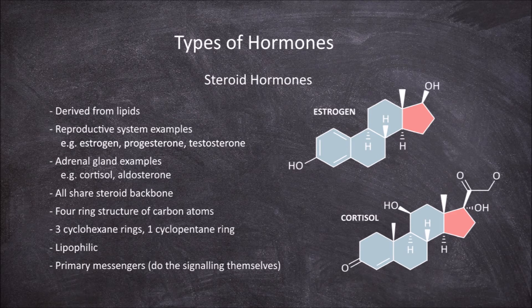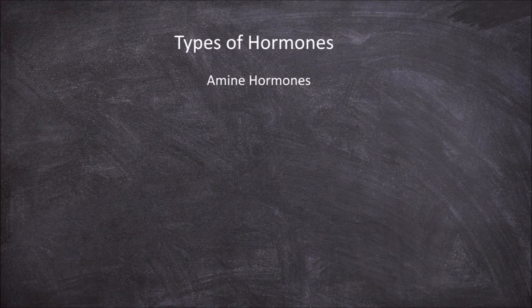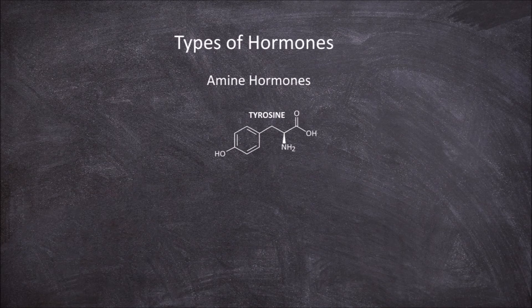The third group of hormones are the amino acid derived hormones, more specifically the amino acid tyrosine derived hormones. All hormones in this group are made from the one amino acid tyrosine. Amino acid derived hormones do not all have the same properties. There are two groups of hormones derived from tyrosine: one group has properties similar to peptide hormones, and the other is more similar to steroid hormones.